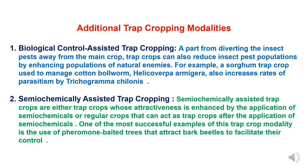Additional trap cropping modalities are of two types. First is biological control-assisted trap cropping, in which apart from diverting insect pests away from the main crop, the trap crop can also reduce insect pest populations by enhancing populations of natural enemies. For example, a sorghum trap crop used to manage cotton bollworm (Helicoverpa armigera) also increases rates of parasitism by Trichogramma colonies.